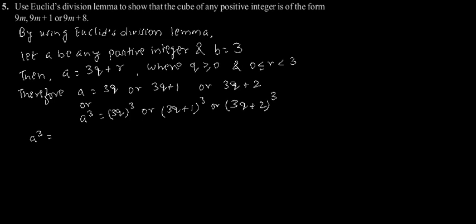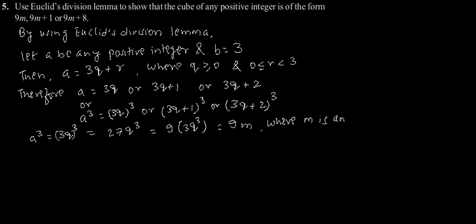Case 1: a³ equals (3q)³, which equals 27q³. This can be written as 9 times 3q³. By putting 3q³ equal to m, this becomes 9m, where m is an integer such that m equals 3q³.